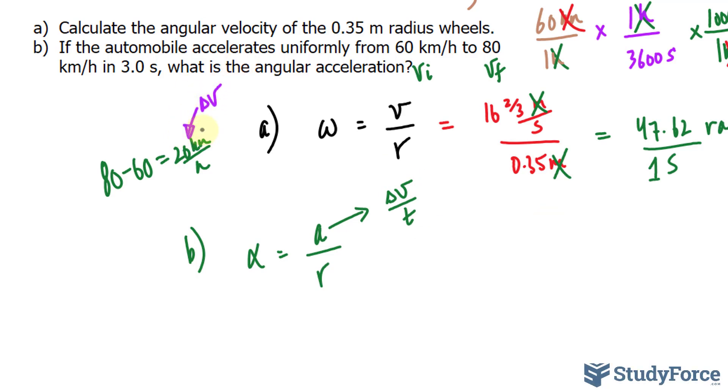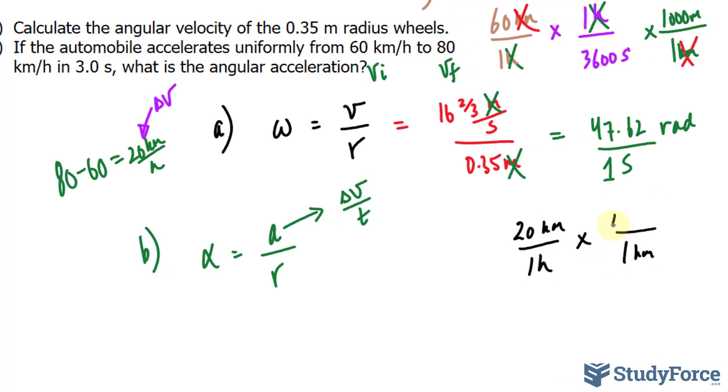Next, what I will do is convert 20 kilometers per hour into meters per second so that when I divide by 3.0, the units are matching. So 20 kilometers per one hour, we have one kilometer makes 1,000 meters. Same conversion as before, and the units will cancel out for kilometers, and one hour makes 3,600 seconds.